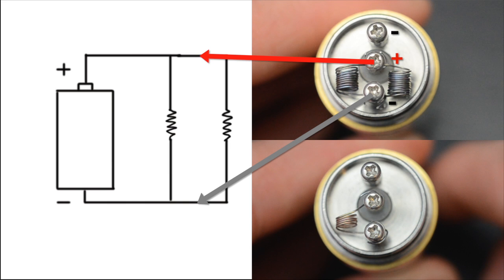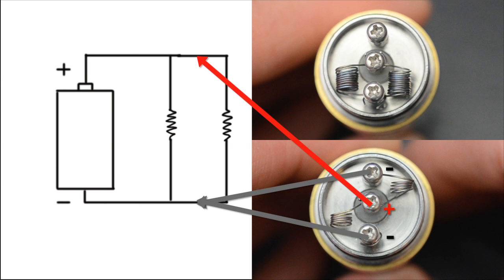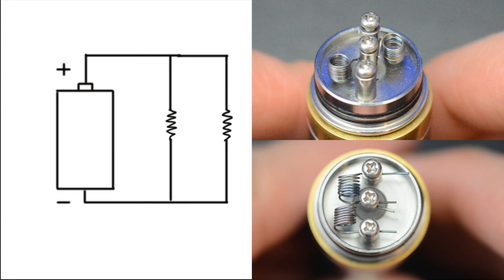But as you can see, this atomizer has two ground posts. So I can place the coils like this, and it'll still be considered parallel. It's wired like the diagram. And these ones as well.